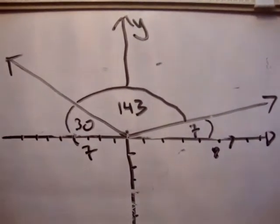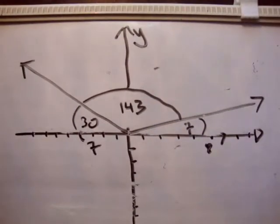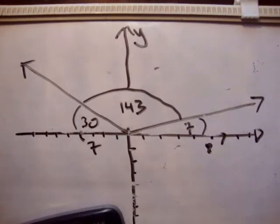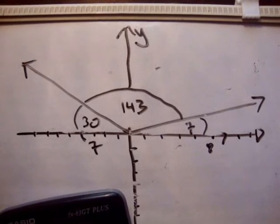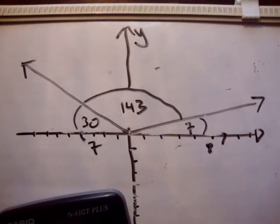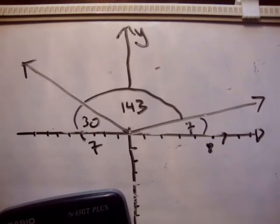We're asked to find the tan of the angle between them. The tan of 143 is negative 0.75. Checking in the back of the book — 143 degrees, tan is plus or minus 3 quarters. Yeah, that's correct.